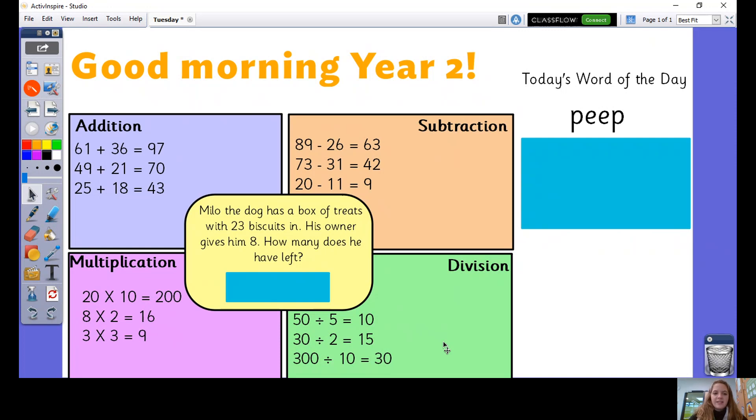Okay, now for our word problem in the centre. Milo the dog has a box of 10. His owner gives him 8. How many does he have left?